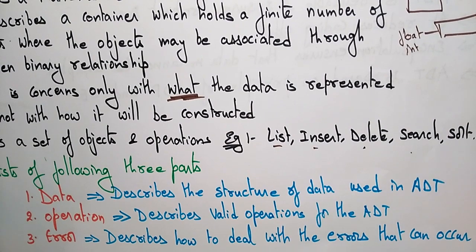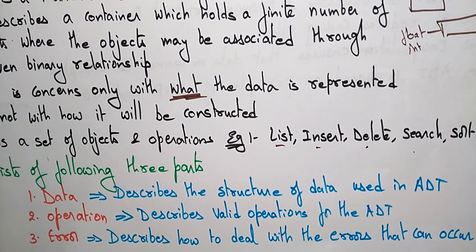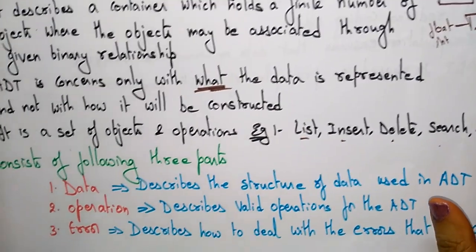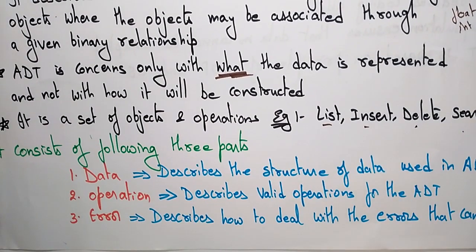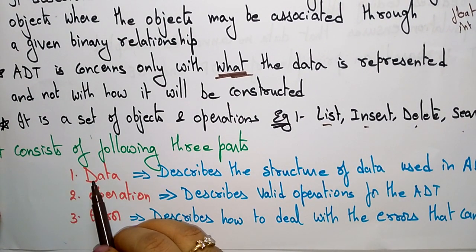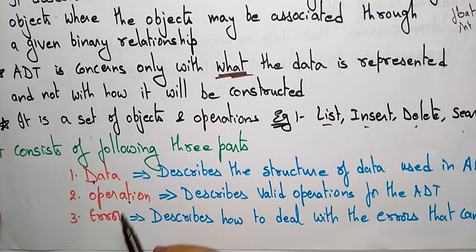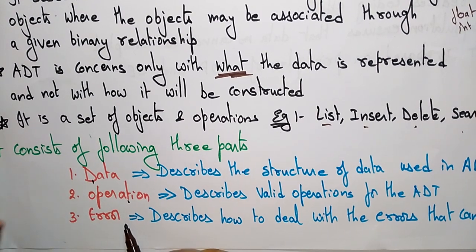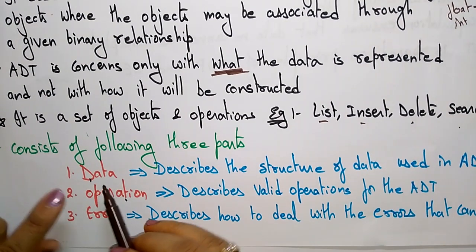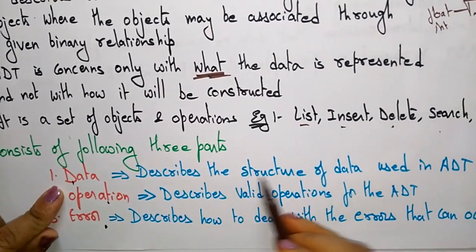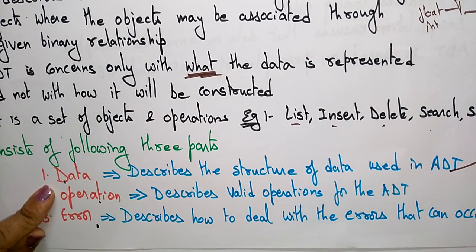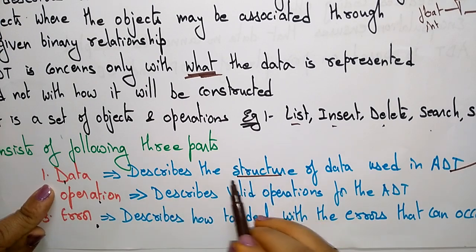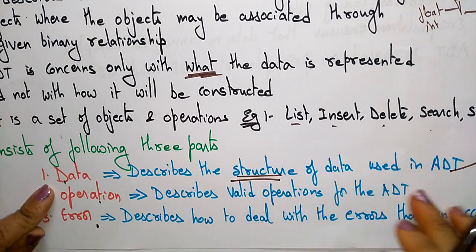The abstract data type consists of a set of objects as well as operations like list, insert, delete, search, and sort. These are the different types of operations that we can perform on the data. Abstract data type consists of the following three parts: data, operations, and errors.